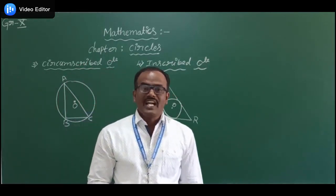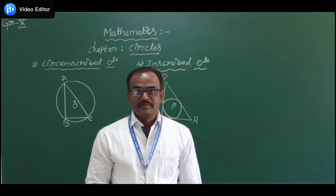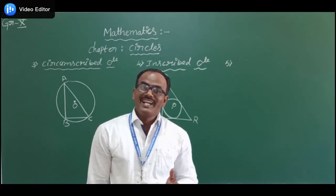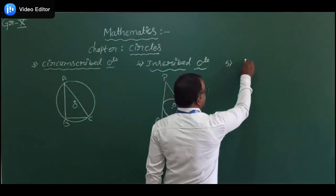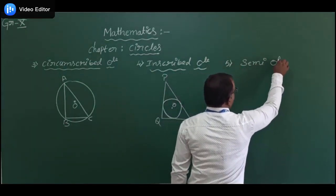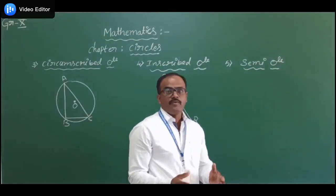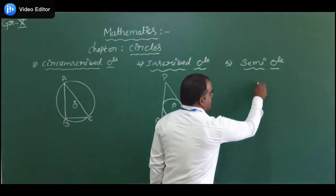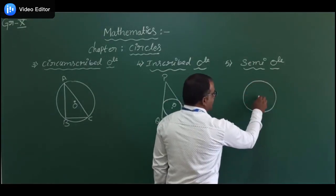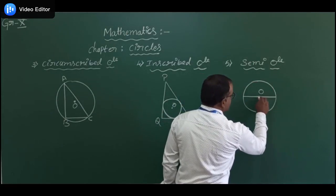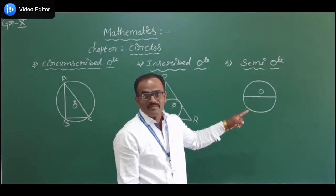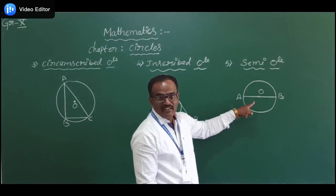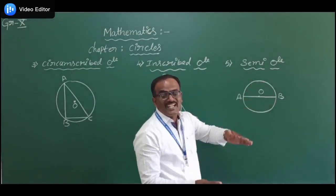After learning circumscribed and inscribed circles, let us move on to study about semicircles. What is a semicircle? Semi means half of the whole. This is a circle — imagine the center of the circle — and the circle is divided by the help of a diameter. AB is the diameter and O is the center of the circle. AB divides the whole circle into two equal parts.